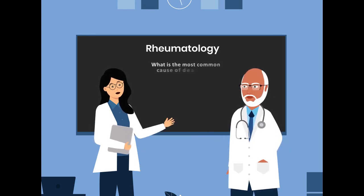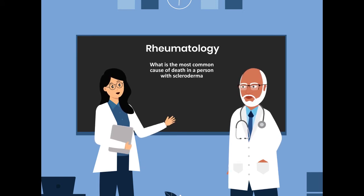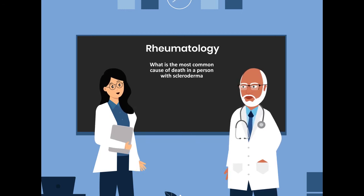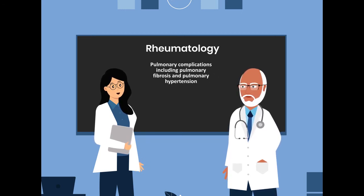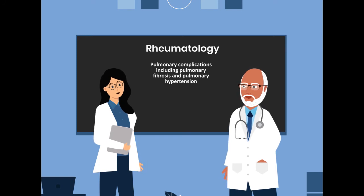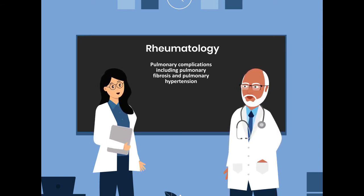What is the most common cause of death in a person with scleroderma? The most common cause of death in a person with scleroderma is pulmonary complications, including pulmonary fibrosis and pulmonary hypertension.